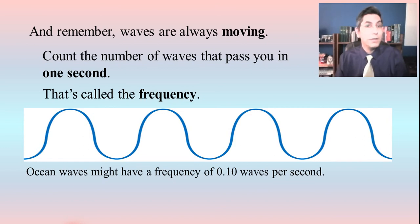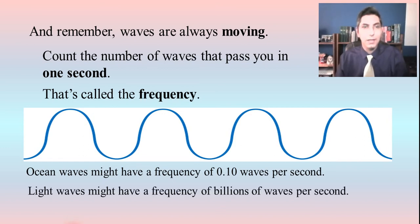If you have something that has a very high frequency, like light waves, we might be talking about a frequency of billions of waves per second, which means that maybe you're sitting somewhere and there are billions of waves hitting you. So we can talk about a very high frequency, like in the case of light. We can talk about lower frequencies, like in the case of sound, and very low frequencies, like in the case of ocean waves.